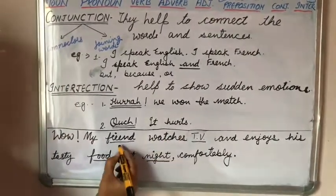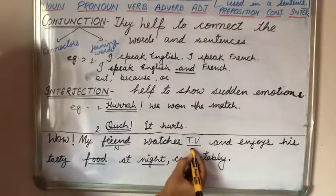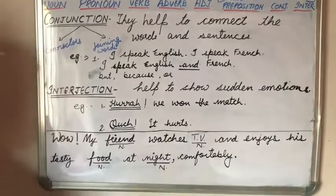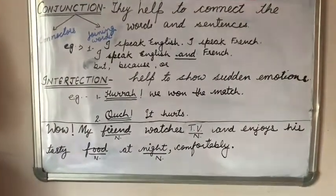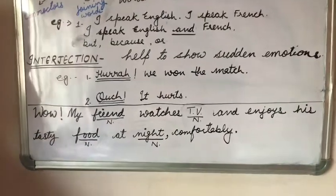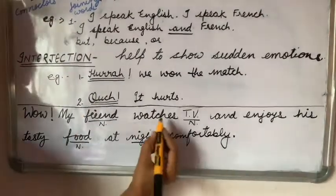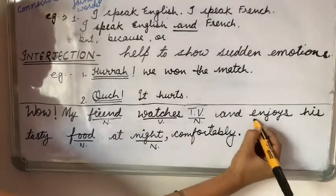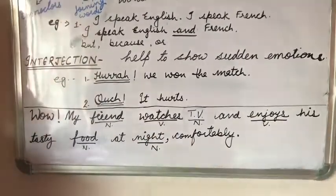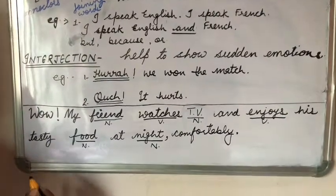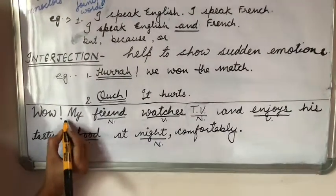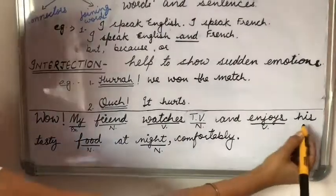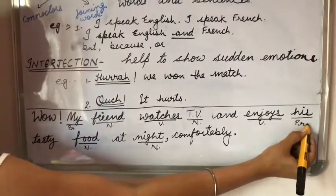They all are nouns because they are naming words — they are the names of something. Now, let's find the verbs: 'watches' and 'enjoys.' They are the action words. Now the pronoun: the word 'my' is a pronoun, and 'his' is also a pronoun.